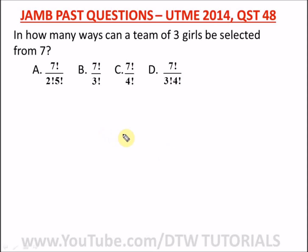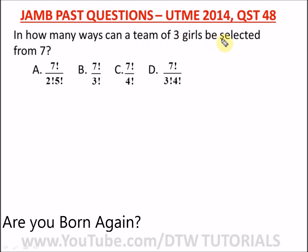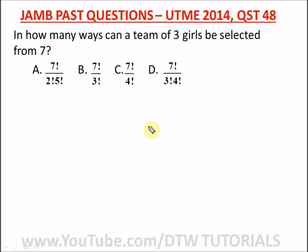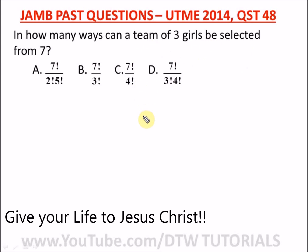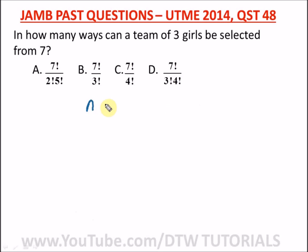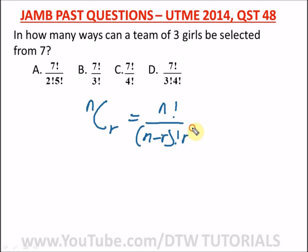Let's go on to the questions. From JAMB 2014, question 48: it says, 'In how many ways can a team of three girls be selected from seven?' Please try to watch the previous video on combinations and the introduction to the topic so you can follow along. Now remember the formula: n combination r equals n factorial over (n minus r) factorial times r factorial.